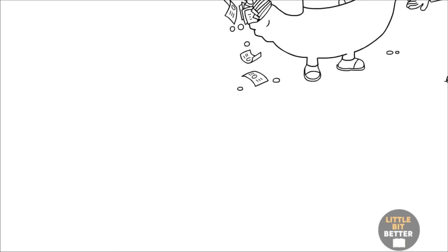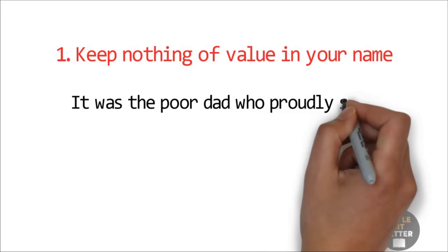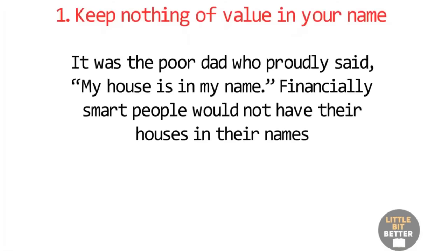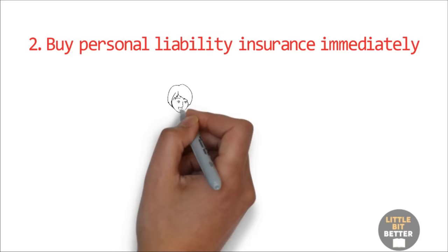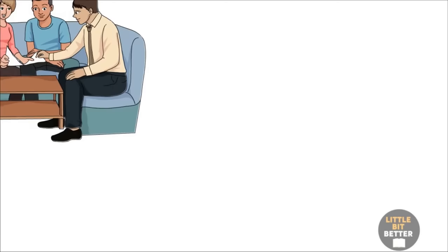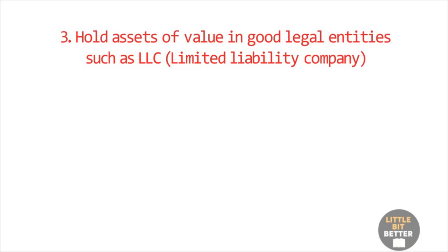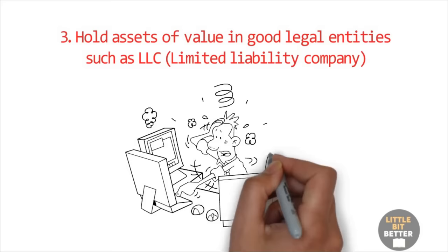Number one, keep nothing of value in your name. It was the poor dad who proudly said, my house is in my name. Financially smart people would not have their houses in their names. Two, buy personal liability insurance immediately. Remember, you cannot buy insurance when you need it. No one sells insurance for a house that is on fire. Three, hold assets of value in good legal entities such as an LLC, limited liability company. There are also bad legal entities. These are sole proprietorships and general partnerships. Ironically, most small business owners are in bad entities.